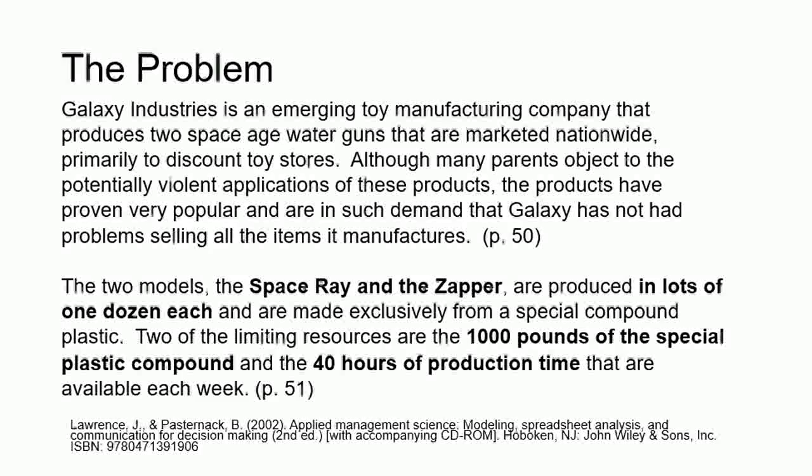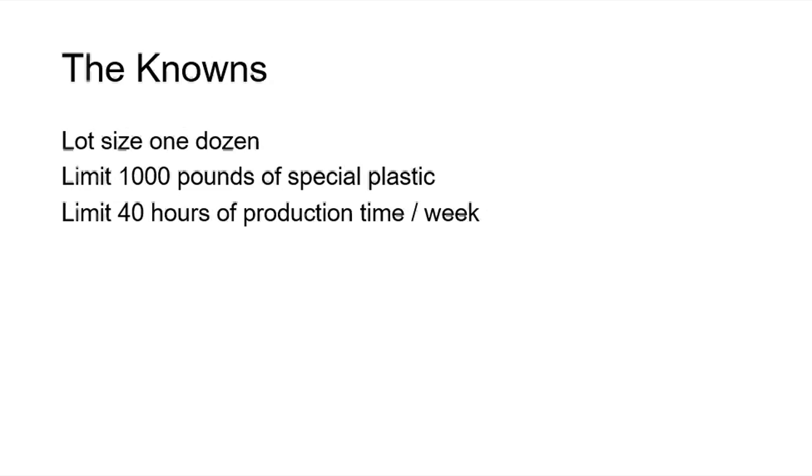They're made from a special plastic, of which we only have a thousand pounds of the plastic available each week, and only 40 hours of production time available each week. A good technique is to write down the knowns as you find them during your second detailed reading of the problem. So there we go. We've got lot size of one dozen, a limit of 1,000 pounds of special plastic per week, and a limit of 40 hours of production time per week.